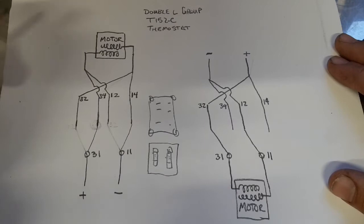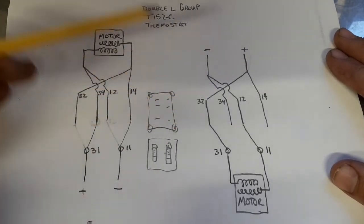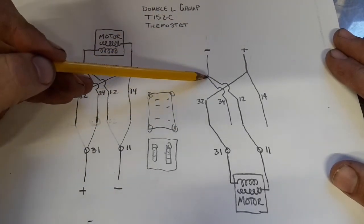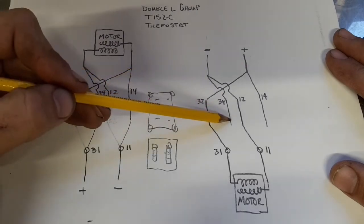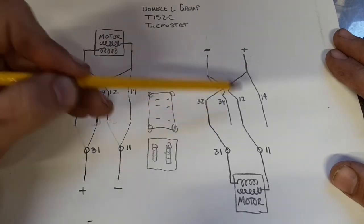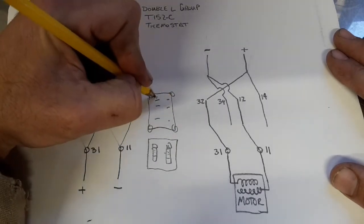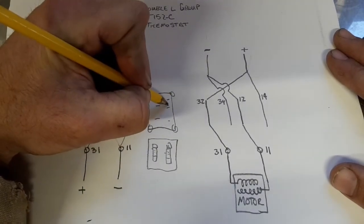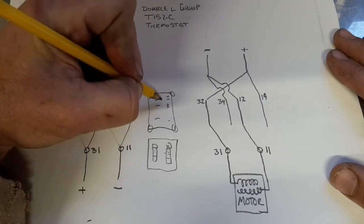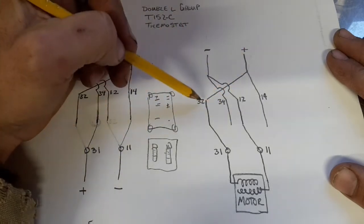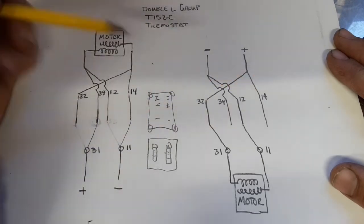The way I figured out how to counter that is, is actually hook it up backwards. So now I'm bringing my power in this side, hooking to 34 and 12, which would be here and here. And my negative goes there and there from the other side, which is 32 and 14.